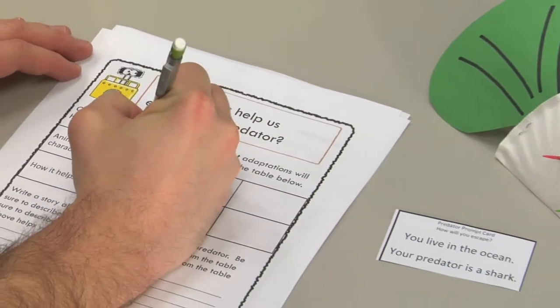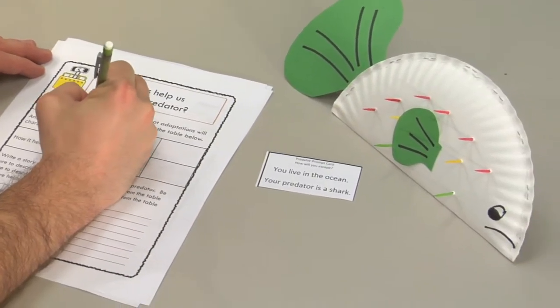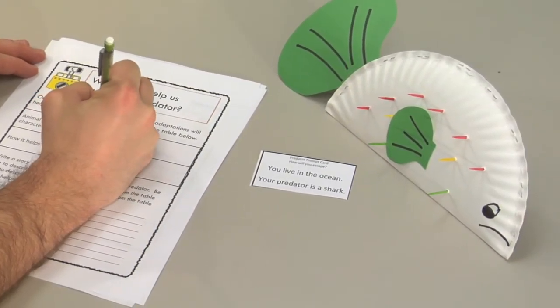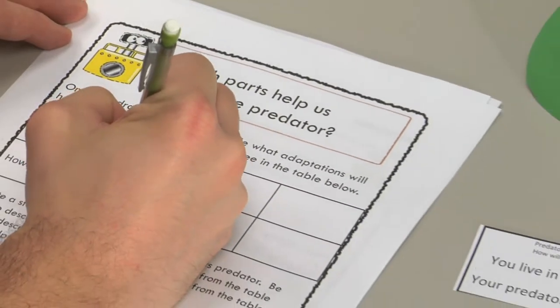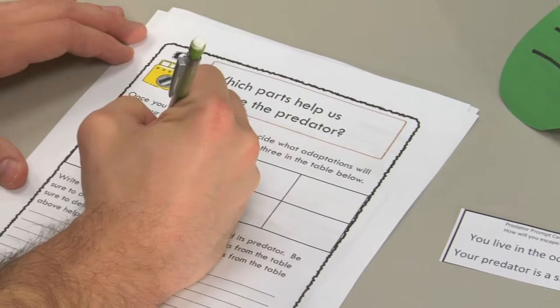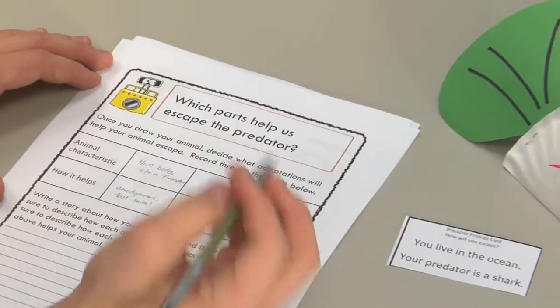Prepare the following items in advance for each group in your class: a set of Predator Prompt Cards, scissors, paper plates, tape, string and craft sticks, play-doh, pipe cleaners, colored construction paper, and any other craft supplies you have available.